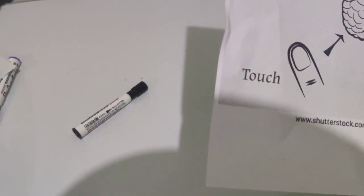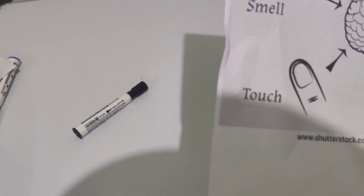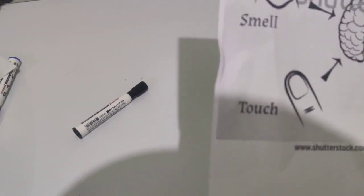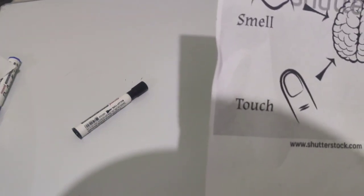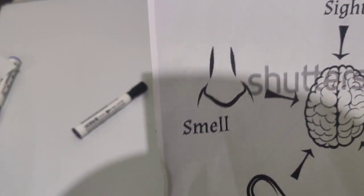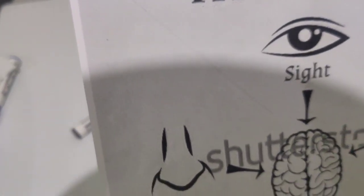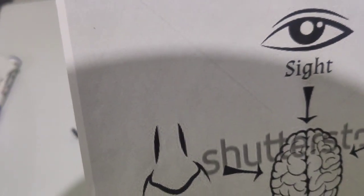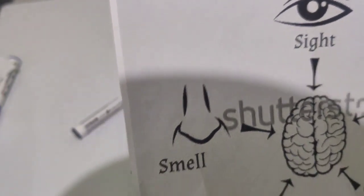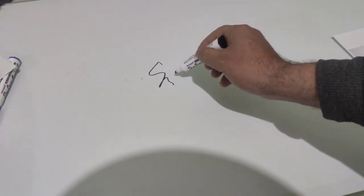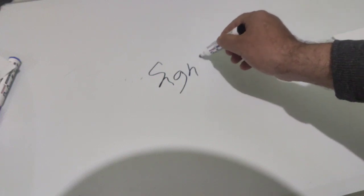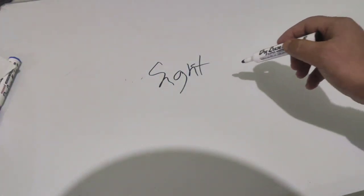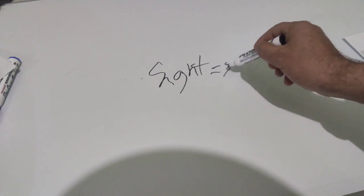Well we are going to give examples to us to make things easy to understand. First of all, the sight. The sight of course has a relationship with the eye. The sight has a relationship with the eye.